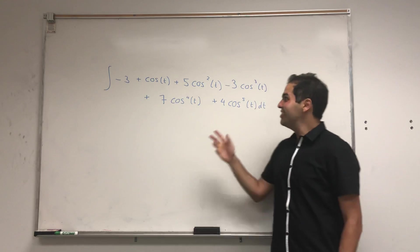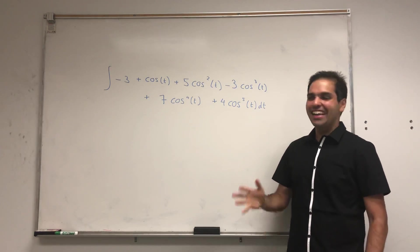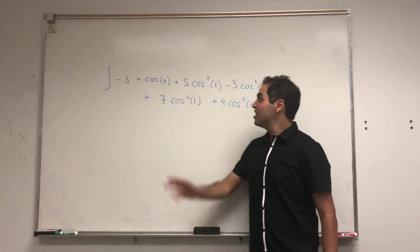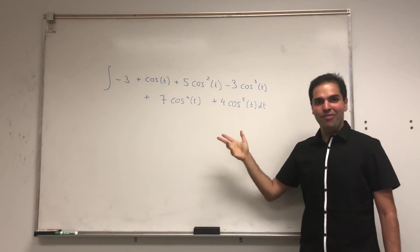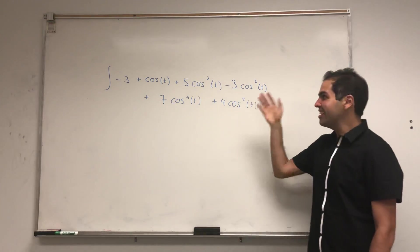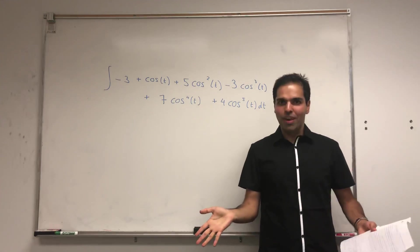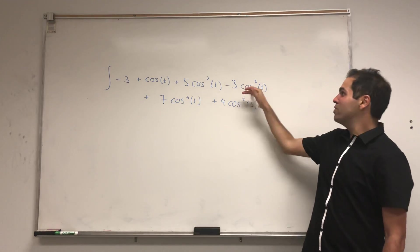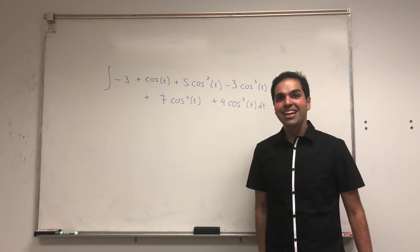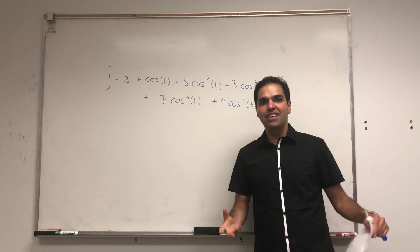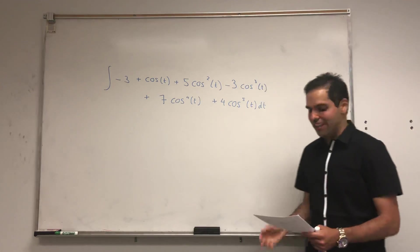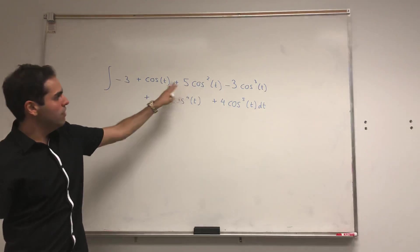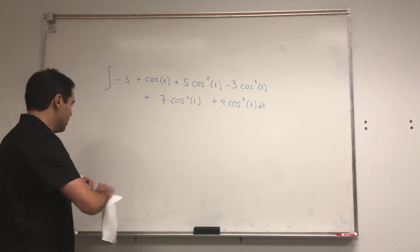Today we want to use linear algebra — more precisely, change of coordinates — to evaluate a monstrous integral. If you're a calculus student, it's not impossible; you'd have to write cosine squared in terms of cosine of 2t, and cosine cubed in terms of cosine of 3t. But the point is that linear algebra provides us a systematic framework. So we want to use change of coordinates.